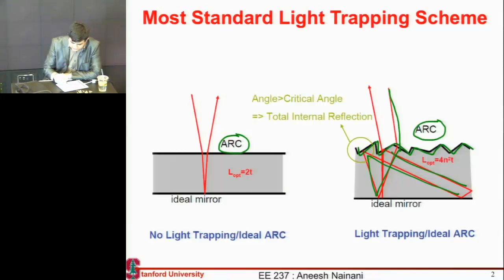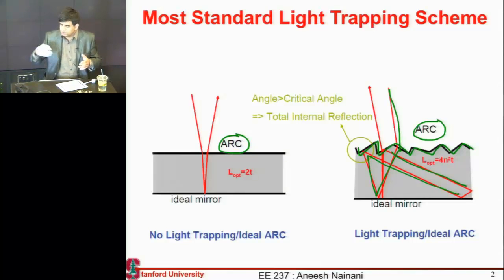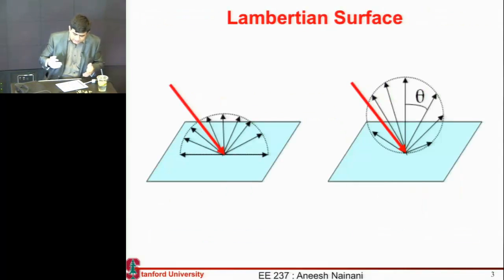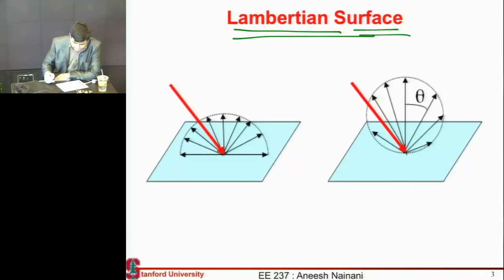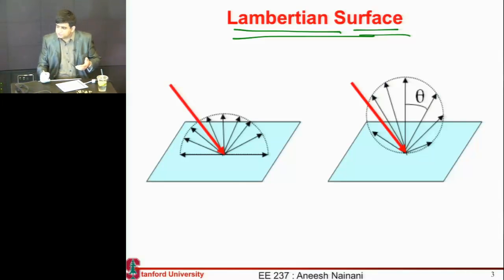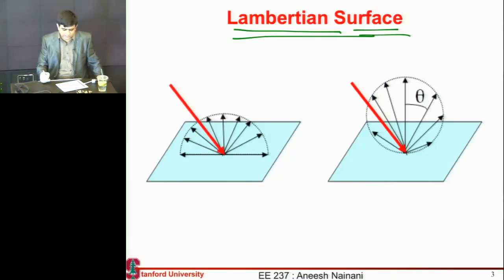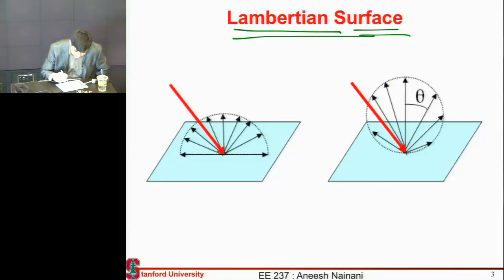For the texturing part, the goal is to create an optical system such that when light is incident and goes inside the cell, it completely forgets where it came from. The gold standard for comparing light trapping schemes is what is called a Lambertian surface. If you read any textbooks or papers on light trapping, they'll always compare their scheme to a Lambertian surface — asking how good their scheme is compared to it.